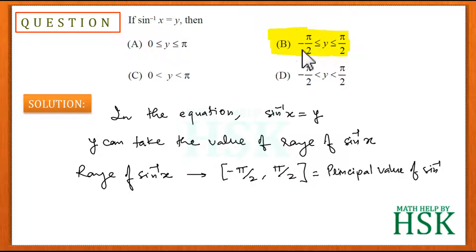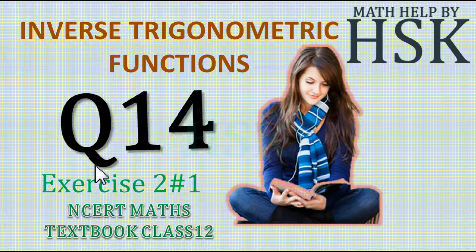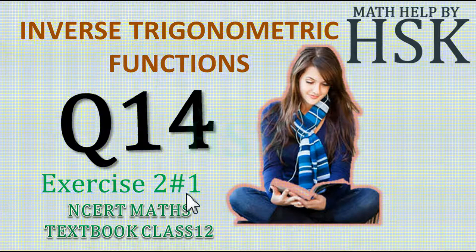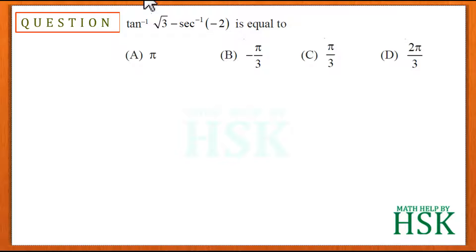Option B is the option which correctly states the range of sin⁻¹(x), so the correct answer is option B. Now taking question number 14 of exercise 2.1 from the chapter Inverse Trigonometrical Functions of NCERT Maths textbook class 12.